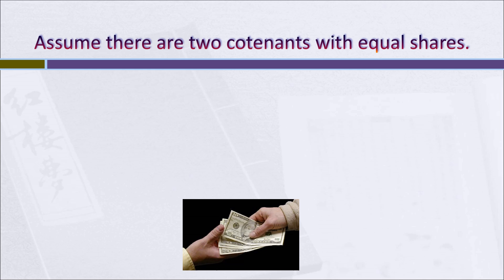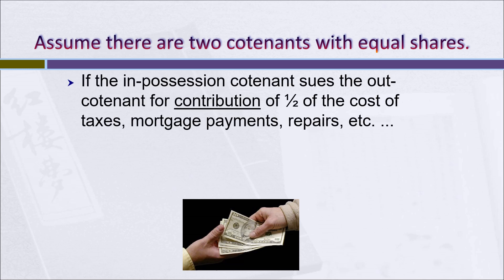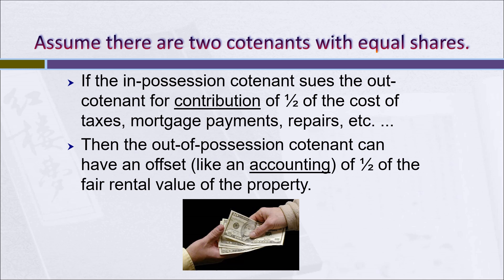Let's see how the principles of accounting and contribution interact with each other. Let's assume there are two co-tenants with equal shares of ownership in the property. If the in-possession co-tenant sues the out-of-possession co-tenant for contribution for half the cost of taxes, mortgage payments, repairs, etc., then the out-of-possession co-tenant can have an offset, similar to an accounting, for half of the fair rental value of the property. In effect, the contribution amount and the accounting amount offset one another.